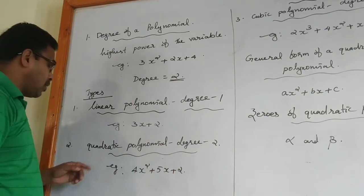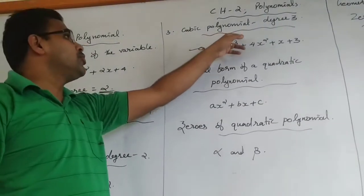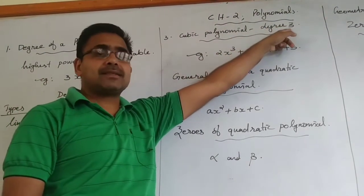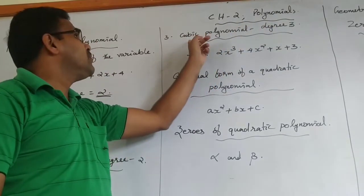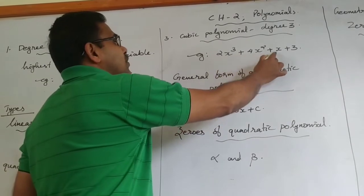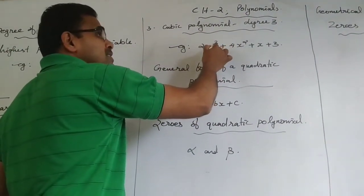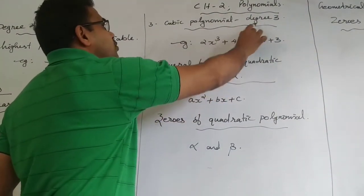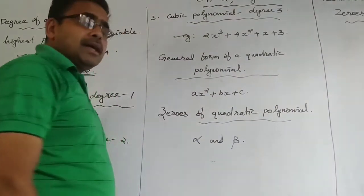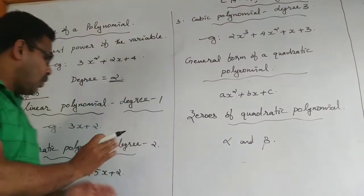That is why this is an example of a quadratic polynomial. The third type is a cubic polynomial. What is cubic polynomial? The degree of the polynomial is 3. We are calling it as a cubic polynomial. For example, 2x³ + 4x² + x + 3. Here the highest power of its variable is 3, so the degree of this polynomial is 3 and this is an example of a cubic polynomial. In class 10, we are mainly focusing on the quadratic polynomial.